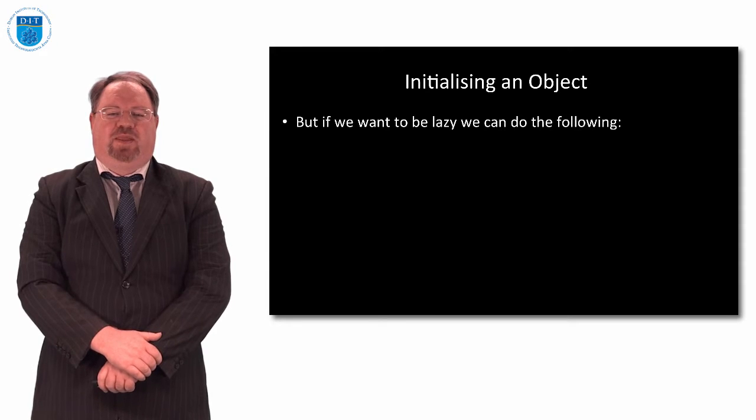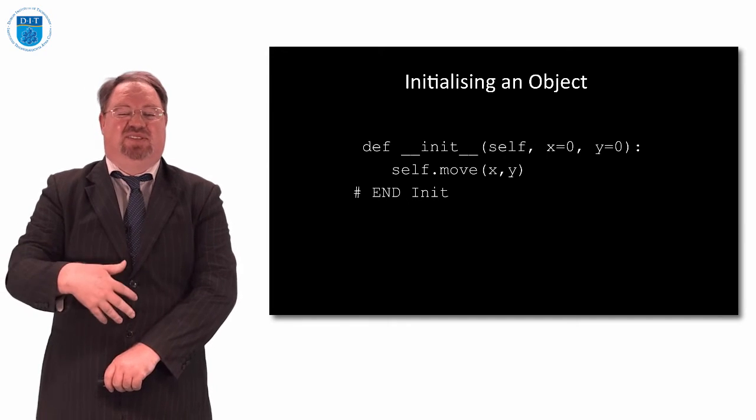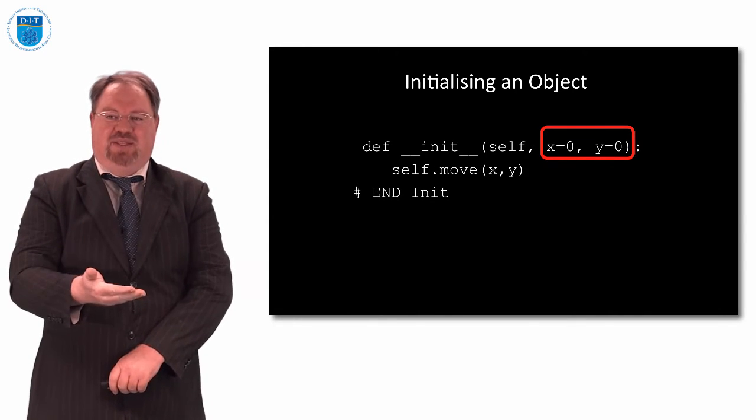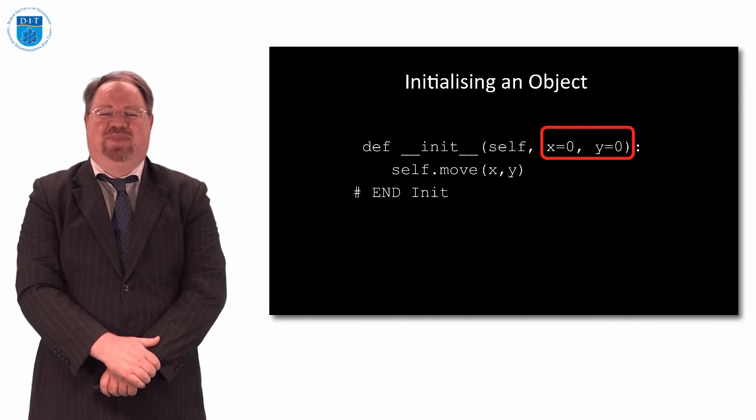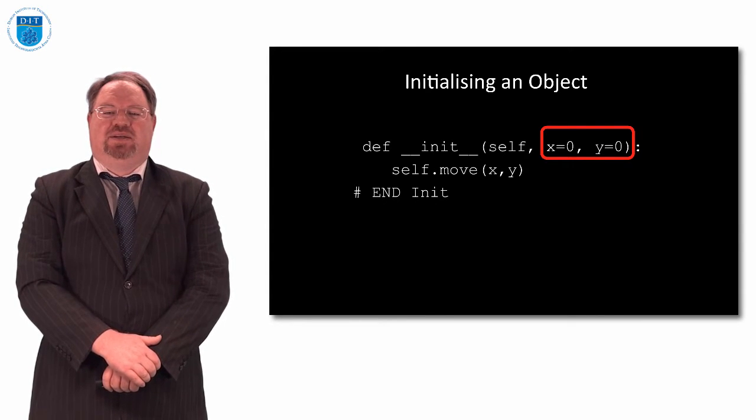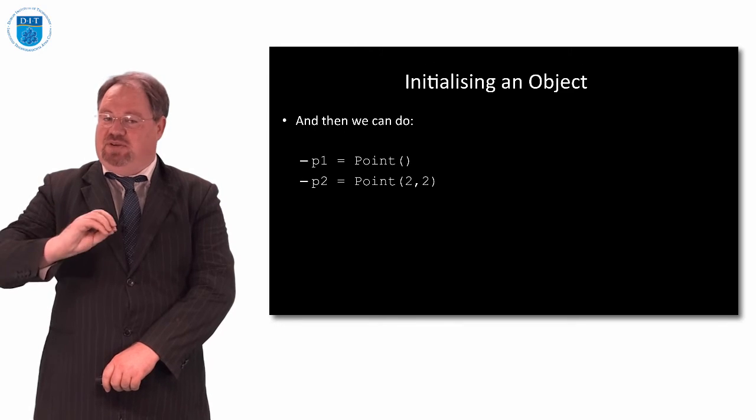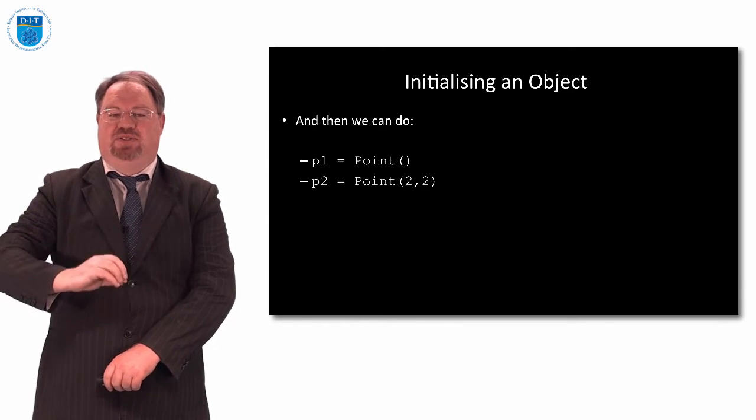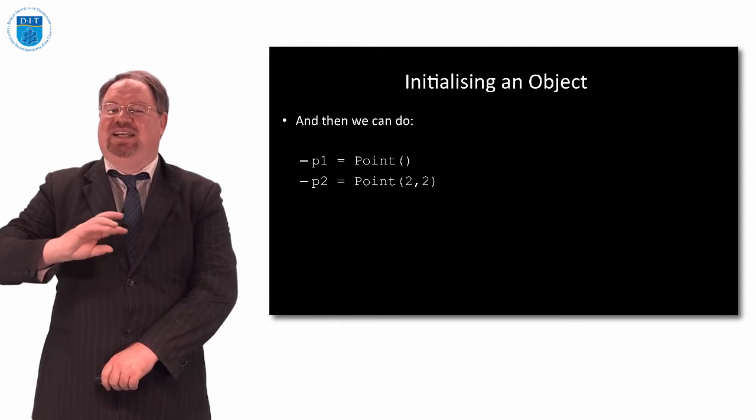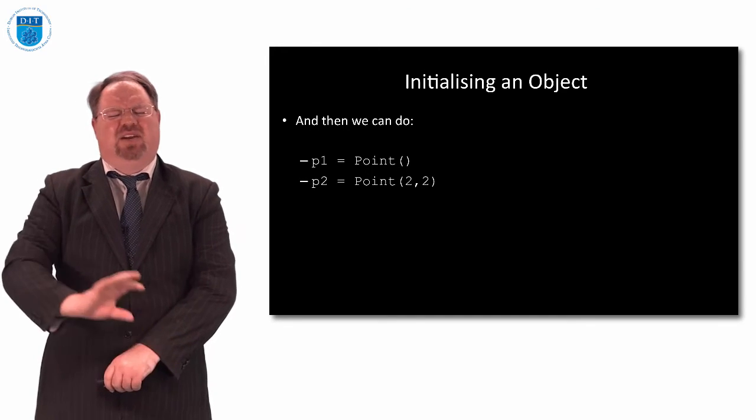If we want to be very lazy, we can do the following. We can declare our method init and say that x gets the value zero and y gets the value zero going into it. So then that saves us a lot of hassle. So then what that's saying is when we declare this method, x and y are going to get the values zero and zero, which is lazy. So that means if I declare my initialization method like this, I can do it either way. If I declare p1 as being point, then it's going to put zero and zero into x and y. So that's neat. So when we put default values into the initialization, that saves us a bit of hassle.